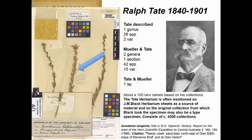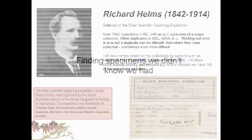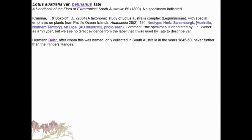Graham mentioned Richard Helms, and our volunteers working on these find them horrible to work with - the labels give you almost nothing to go on, with only a date to help determine what belongs with what. In one case, Russian researchers borrowed our specimens looking for the type of Lotus australis barbarianus, named after Herman Baer who collected in South Australia from 1845 to 1850. He never went further north than the Flinders Ranges, but the type was said to be taken from Mount Olga.